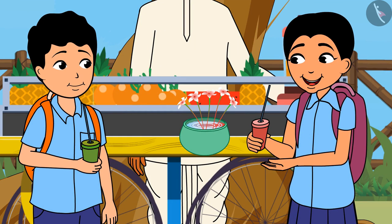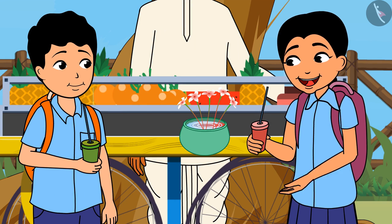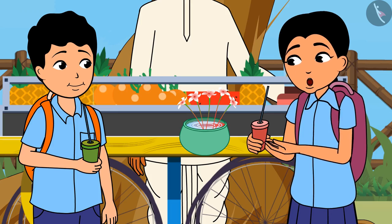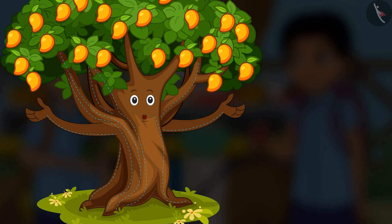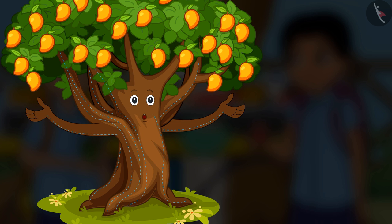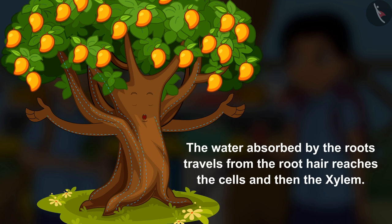It is astonishing, Ramesh! Just like we drank juice with the help of a straw, the question Geeta and Ramesh asked is very interesting. Similarly, suction takes place in plants and trees. The water absorbed by the roots travels from the root hair, reaches the cells, and then the xylem.